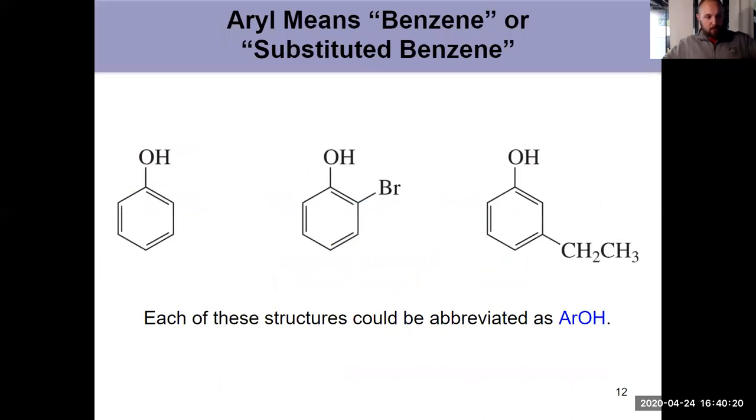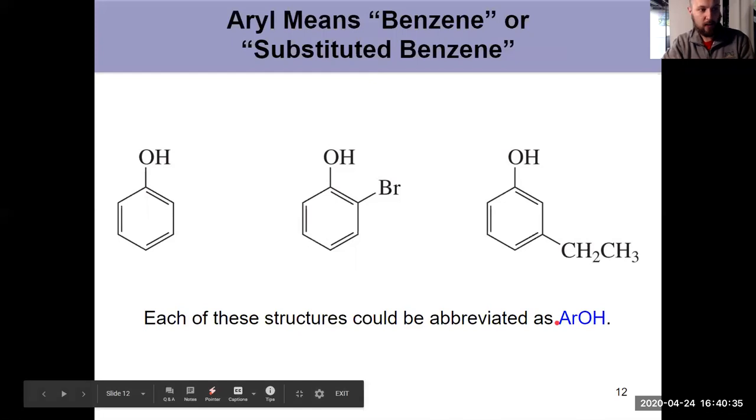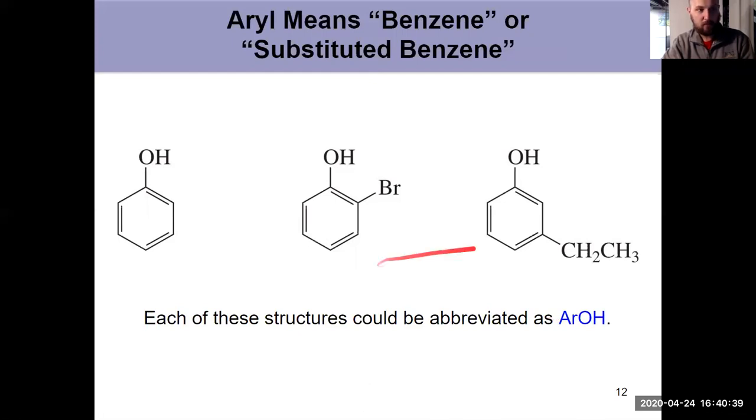But we've also discussed previously the idea of an aryl group. An aryl group means you've got benzene or a substituted benzene somewhere else. So each of these structures could be abbreviated as ArOH, because this is an aryl group, this is an aryl group, this is an aryl group.